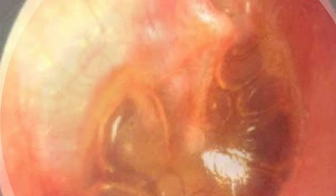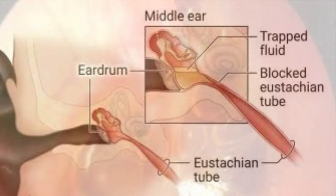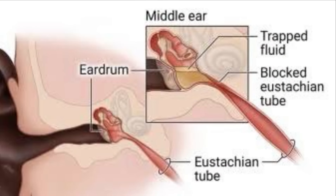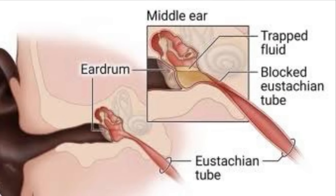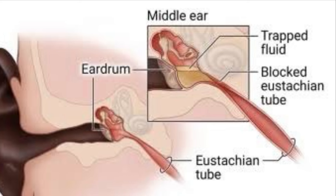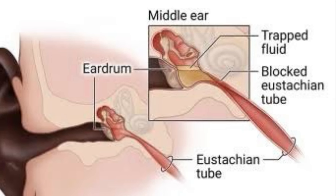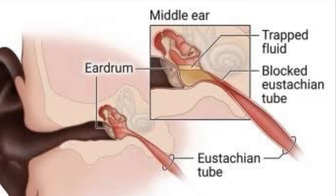Otitis media with effusion, OME, is the presence of fluid in the middle ear without signs of acute infection. It's most commonly seen in children, but can occur in adults, especially after upper respiratory tract infections or due to eustachian tube dysfunction.